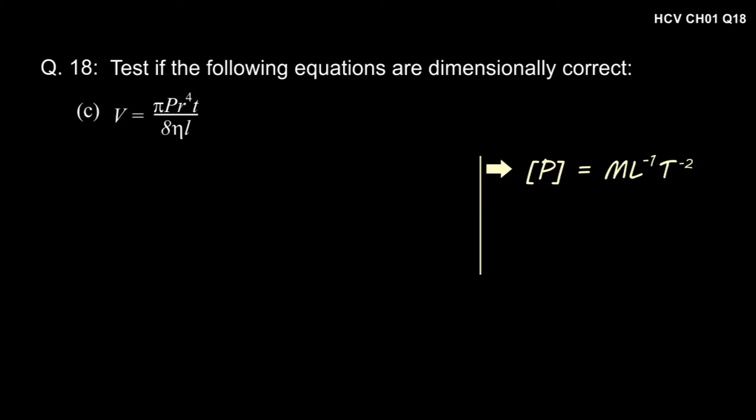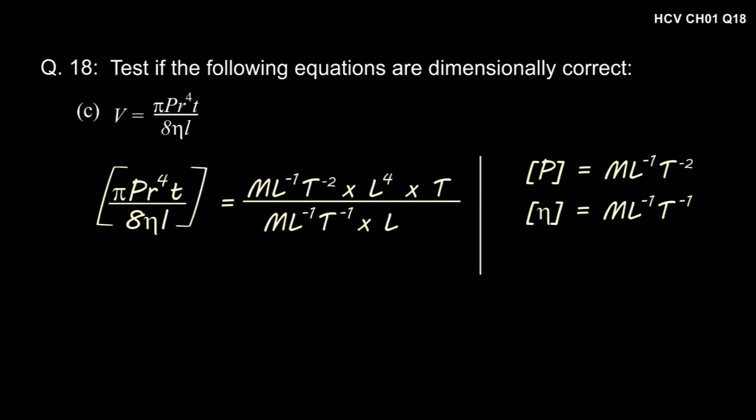In part C of the question, volume is equal to pi P r to the power 4 t divided by 8 eta L. The dimension of P is ML to the power minus 1 t to the power minus 2, and the dimension of eta is ML to the power minus 1 t to the power minus 1. Putting these dimensions in the expression, we get ML to the power minus 1 t to the power minus 2 into L to the power 4 into t, divided by ML to the power minus 1 t to the power minus 1 into L. Simplifying, we get L cubed, which is the same as the dimension of volume. Therefore, the expression is dimensionally correct.